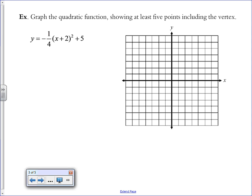So here we're asked to graph this function, showing at least 5 points including the vertex. The vertex is the easiest point to find. It's h, k, and we're looking at it right there in the equation. So we find negative 2, 5 and plot it. There's our vertex.